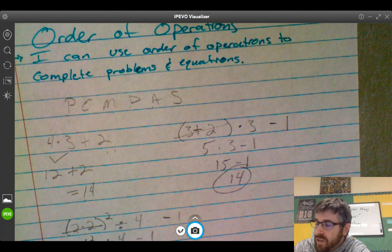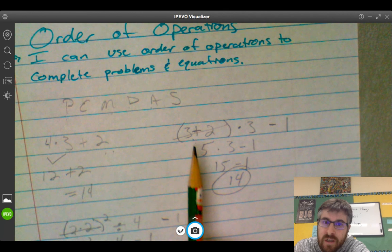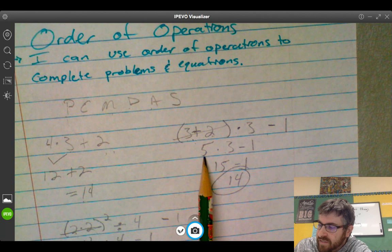Here we have parentheses first. We have to do what's inside the parentheses even if it's adding. Inside the parentheses, it says 3 plus 2. Outside the parentheses, times 3, minus 1. So 3 plus 2 is 5. Times 3 comes down, minus 1. 15 minus 1 is 14.